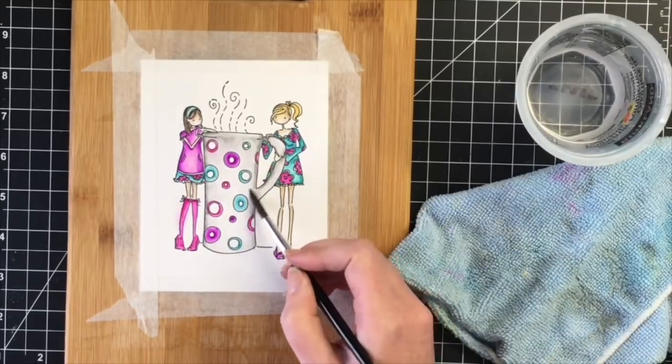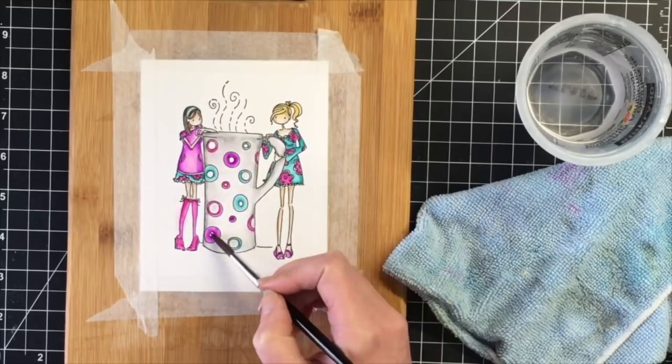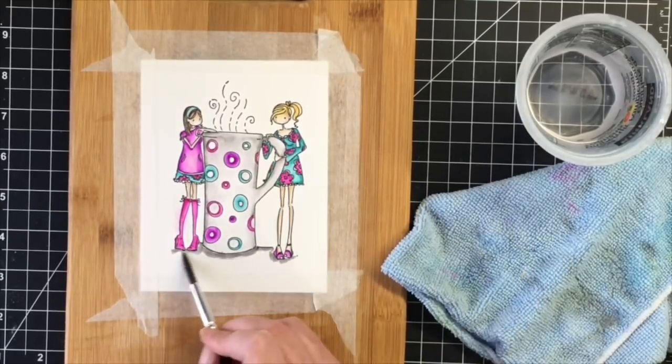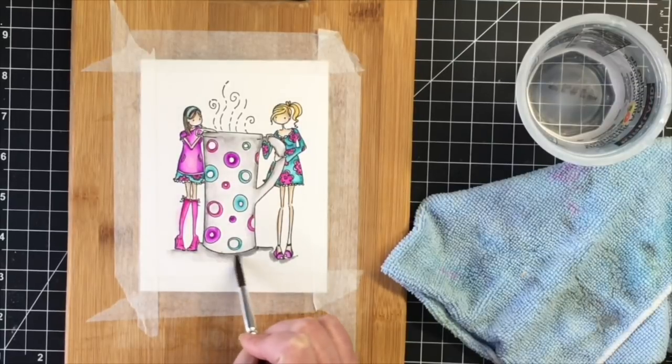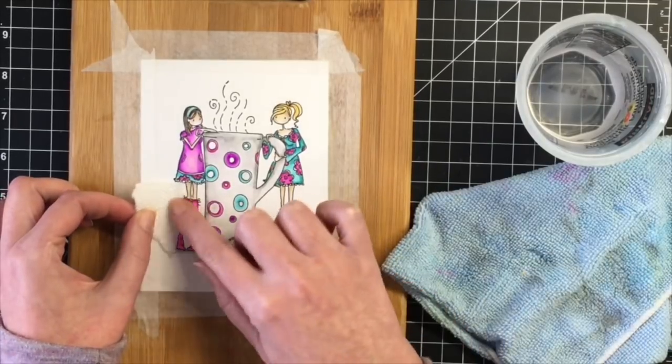So I am almost done the coloring. I'm just going to give them a little bit of shading underneath here. And that way they don't look like they're floating and it provides some shadows. Still trying to fix up here where I went out of the line with her boot.